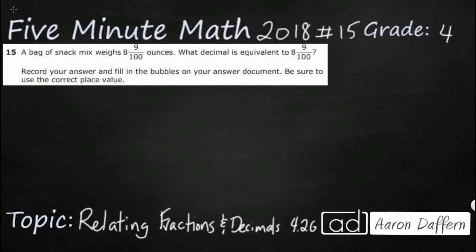So we have a bag of snack mix that weighs 8 and 9 hundredths, or 8 and 9 over 100 ounces. We need to turn this into a decimal. There is no A, B, C, or D to choose from. We're going to have to figure this out on our own.